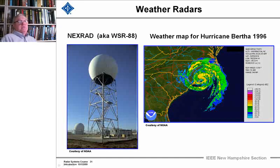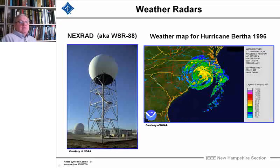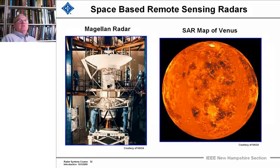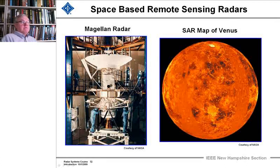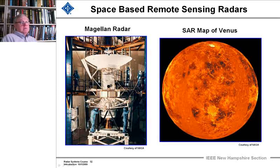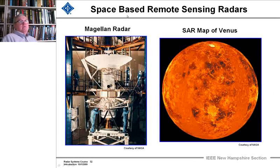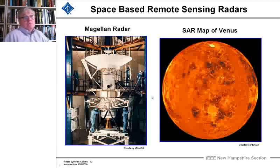Next we're going to look at space-based remote sensing radars. This radar was built by Jet Propulsion Laboratory, placed on a spacecraft that flew to Venus and mapped Venus with a synthetic aperture radar — here we see the antenna — producing fantastic science. I'll spend some time learning about this and put it up so people can see it as one of the uses of radar.